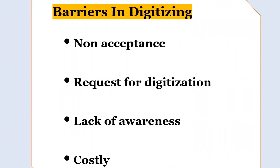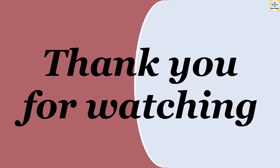Now let's see the barriers in digitizing. Initially, no one was ready to accept what digitization was, and everyone was hesitating in submitting their manuscripts for digitization. Second, initially proposals were sent to the public to submit manuscripts for digitization, but now the system has changed and requests are being sent by the public. There is a need to create awareness among the public about preservation of archives so that this legacy can be handed over to future generations. The fourth barrier is that digitization requires a huge amount of money; therefore, a new scheme of adopting one book for digitization has been introduced.